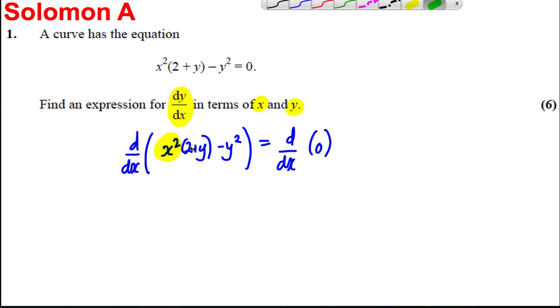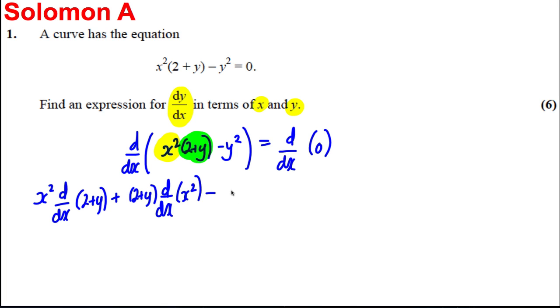That's going to be thought of as my u, that's going to be thought of as my v. What I'm going to do when I'm differentiating that is firstly do uv dash - I'm going to leave the x squared and differentiate 2 plus y. Then I'm going to do vu dash - so leave the 2 plus y and differentiate the x squared. Then I'm going to subtract the answer when I differentiate y squared. If I differentiate the number zero, I'm going to get zero.